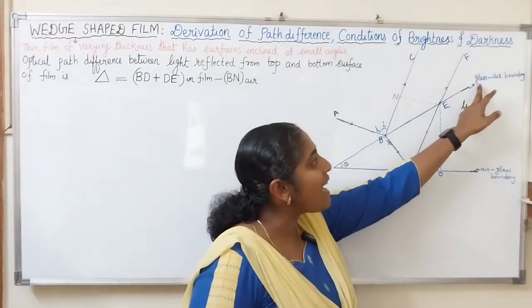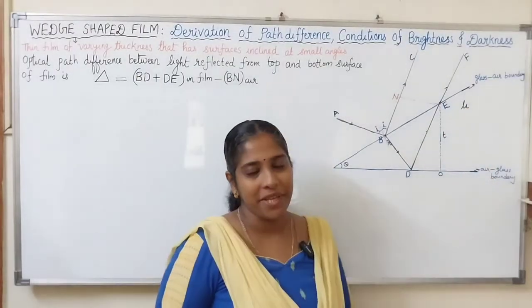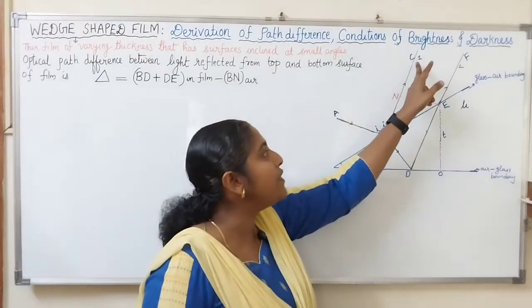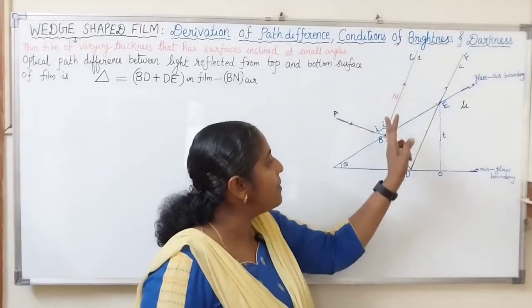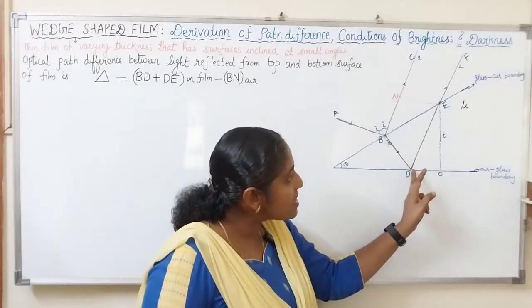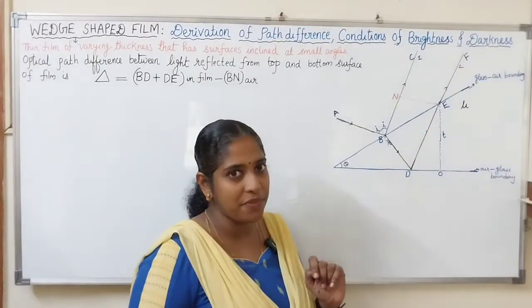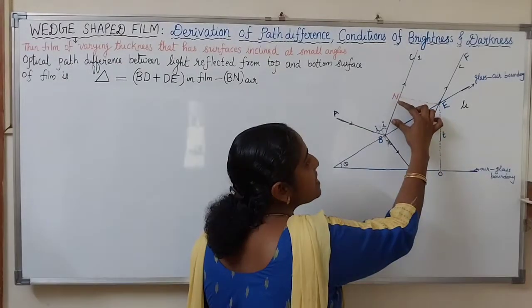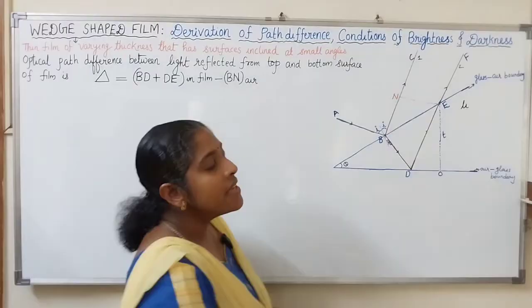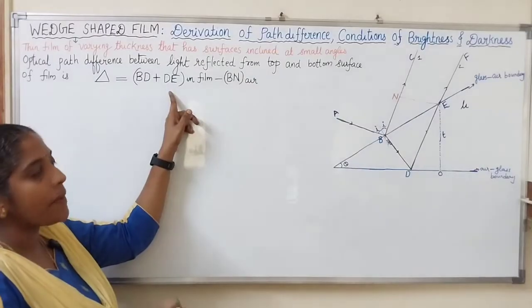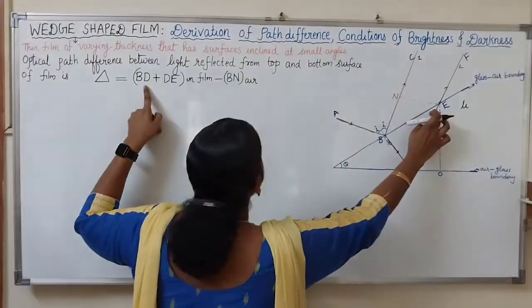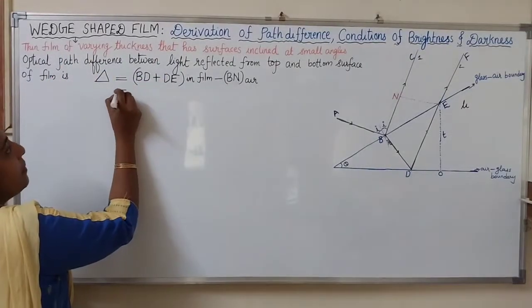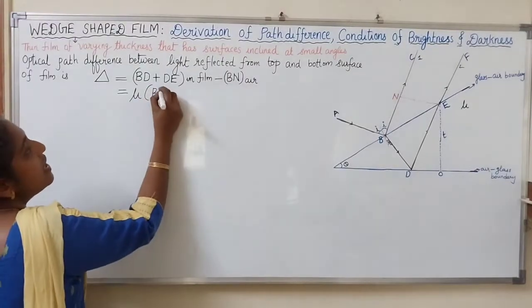The top surface of the film occurs at a glass to air boundary. The bottom surface of the film is at an air to glass boundary. From the point E, we can draw a normal to the light reflected from the top surface. AB is the incident ray, BC is the light reflected from the top surface, BD is the refracted ray into the film, and DEF is the reflected ray from the bottom surface. So the extra path travelled by the second light ray is BD plus DE, and the extra path travelled by the first ray in comparison is BN. So the path difference is BD plus DE in film minus BN in air.